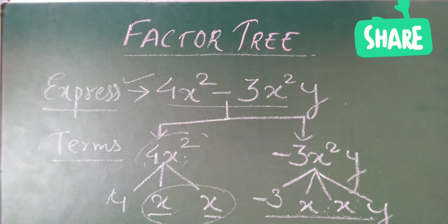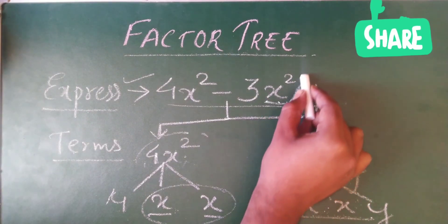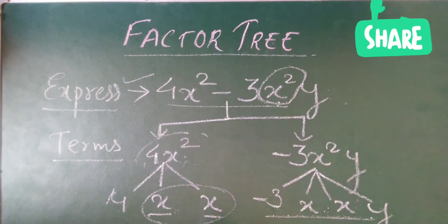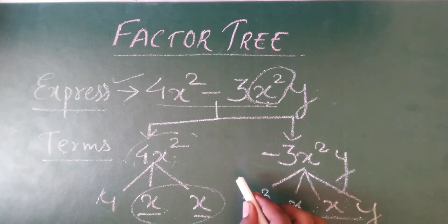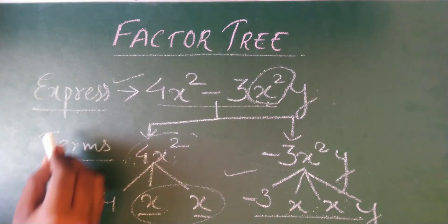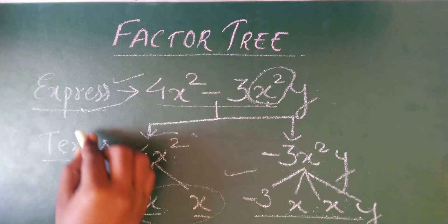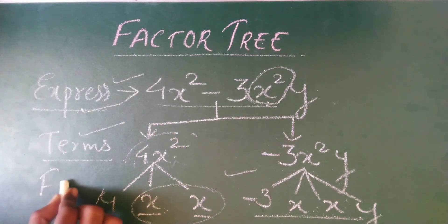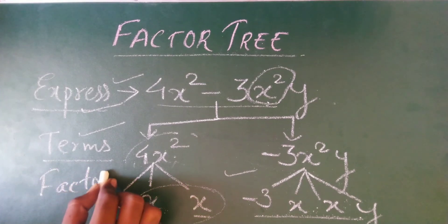So we got the final factor tree. To summarize: first you write the expression, then you write the terms of that expression, then you write the factors of those terms. That's how you draw the factor tree.